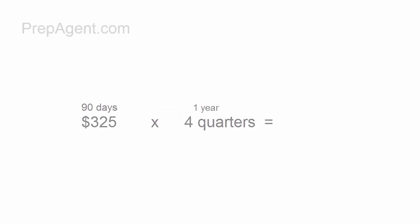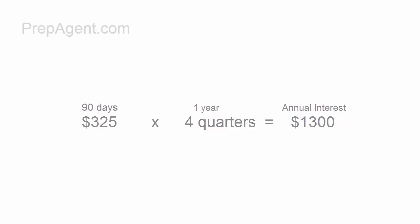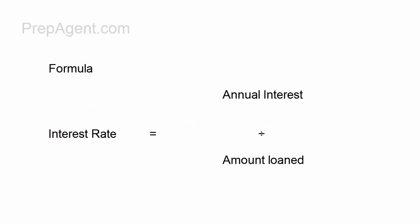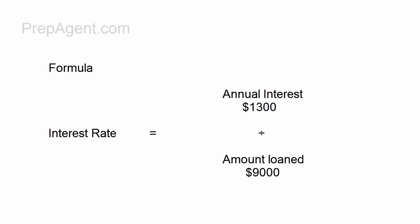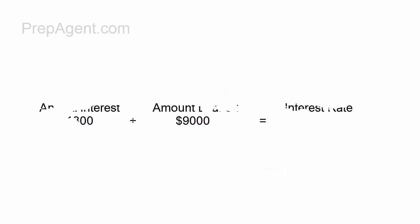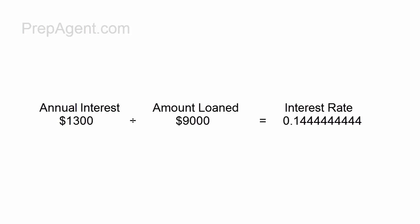So on the formula, interest rate equals the annual interest of $1,300 divided by the amount loaned of $9,000. So $1,300 divided by $9,000 will give you 0.144444444 on your calculator, and you need to move the decimal point by two, and that will give you 14%.